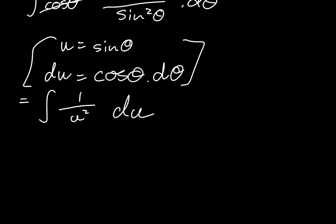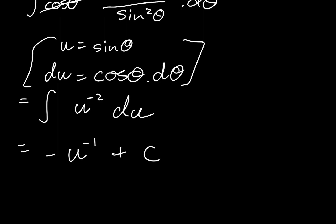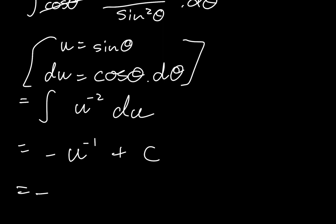That's essentially solvable now. We take u squared from the denominator into the numerator by making the exponent negative. Solving the integral gives negative u to the negative 1, plus c. Now we substitute back in terms of x. For u we substitute in sine of theta, giving negative 1 over sine of theta plus c, since u to the negative 1 is 1 over u.